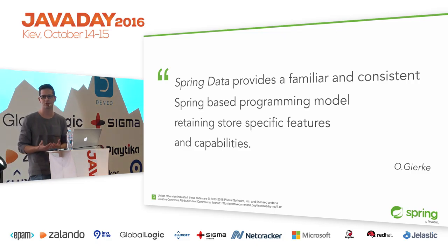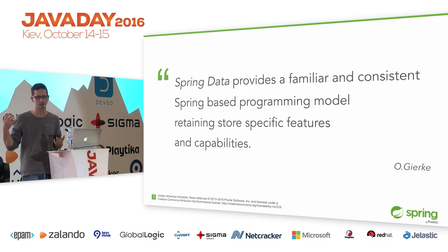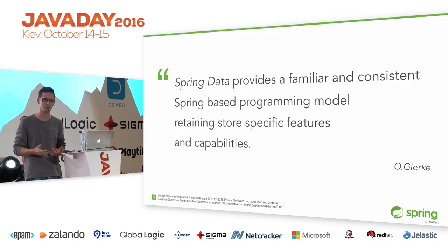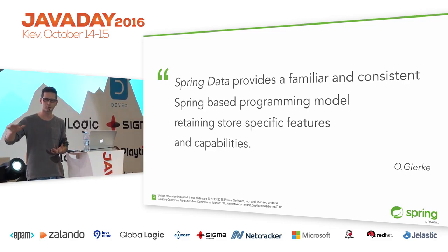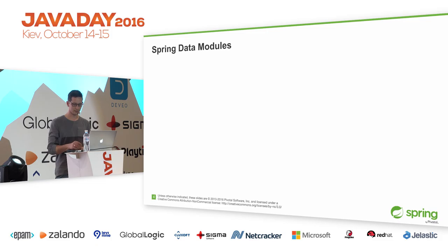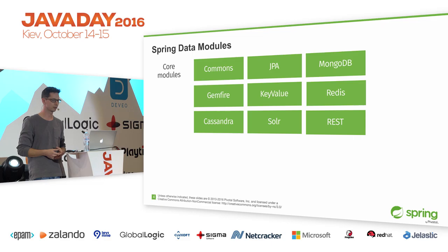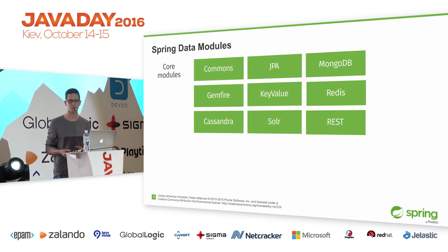The main goal of Spring Data is defined by our project lead Oliver Gierke: we want to provide you with a familiar and consistent Spring-based programming model while retaining store-specific capabilities and features. We want to give you a Spring feeling when interacting with different data stores like JPA and MongoDB, while still allowing you to access native stuff in MongoDB, Neo4j, JPA, whatever.